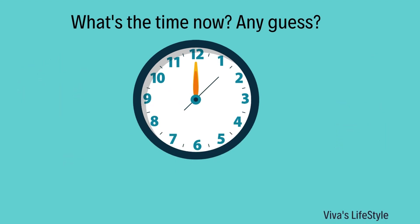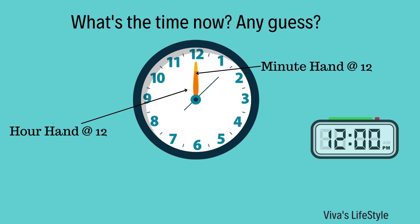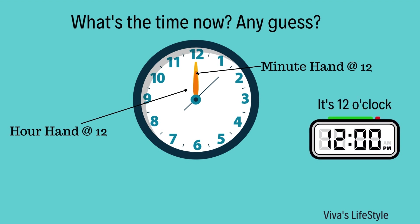Now, both the hour hand and minute hand indicate 12. What does that mean? It's 12 o'clock. It can be a.m. or p.m. Interesting, isn't it?